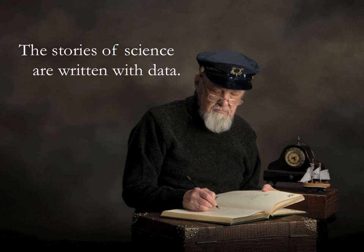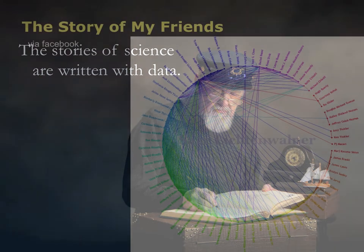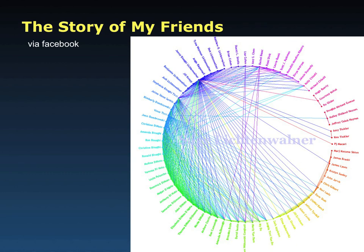One example of a story that we can share with data is a personal story of our friends. We can do that now very easily with our friends on Facebook. Many of us have seen Facebook friend wheels where it actually tells us the story of us — who are our friends, our associations, our connections. From a friend wheel, you can actually see the clusters of friends you have and the groupings that naturally fall out, like your family, your college friends, and your high school friends.